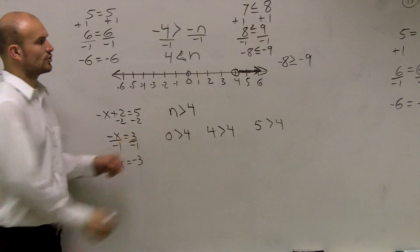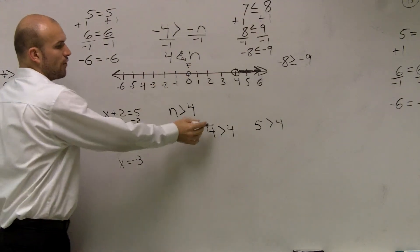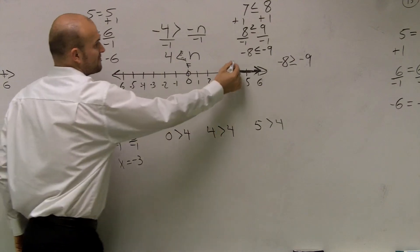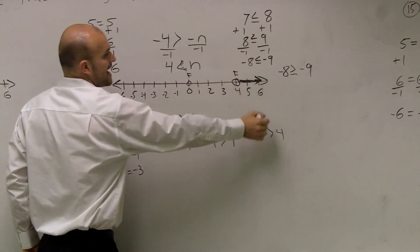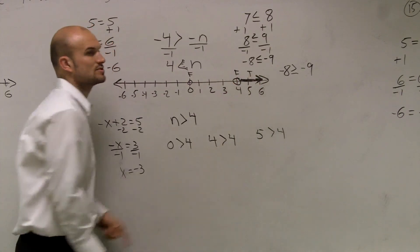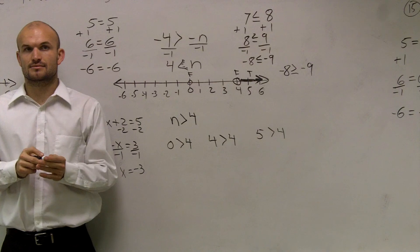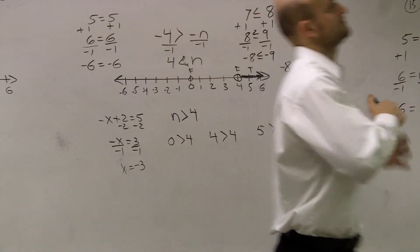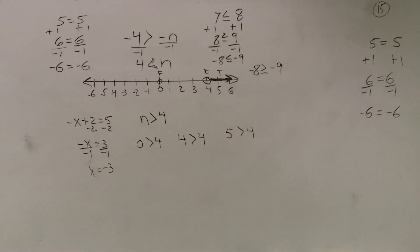You notice 0 greater than 4 is false, so obviously you're not going to shade that way. 4 is greater than 4, that's false. That's why we didn't shade in that dot. And 5 is greater than 4, which is true. So that's why we shade it to the right direction. Make sense? Sweet. We're knocking them out of the park.